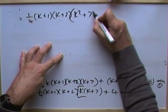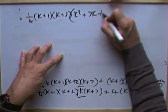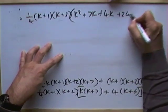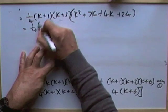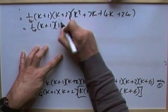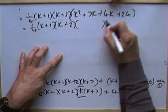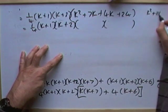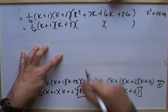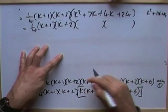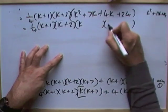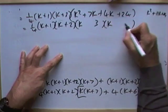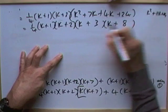So this expression becomes one quarter times (k+1) times (k+2), and this part tidies up into a little quadratic: k squared plus 7k plus 4k plus 24. That gives one quarter (k+1)(k+2) times (k squared plus 11k plus 24), just to save space. That factors as k times k — factors of 24 that add up to 11 are 3 and 8 — so (k+3)(k+8), with everything positive.